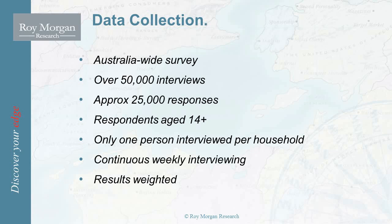There are approximately 25,000 responses nationally for self-completion questionnaire. Respondents are aged 14 plus. We only interview one person per household. We have continuous weekly interviewing. And finally, results are weighted to reflect geographic, age and sex distribution of the population according to the latest ABS statistics.